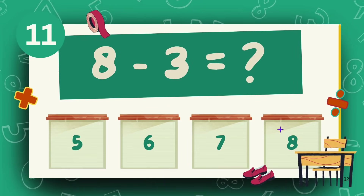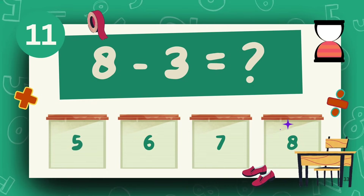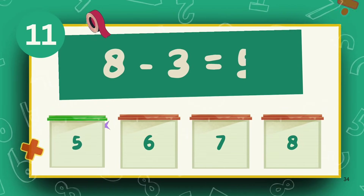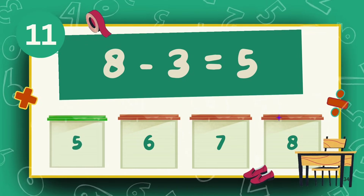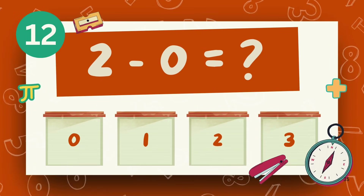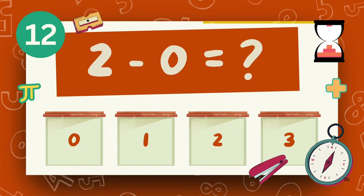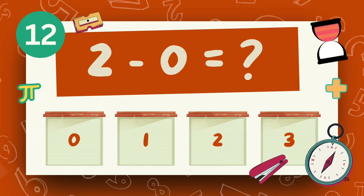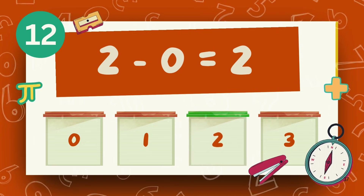What is 8 minus 3? The answer is 3. What is 2 minus 0? The answer is 2.